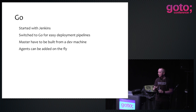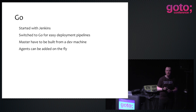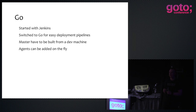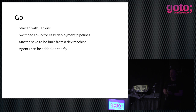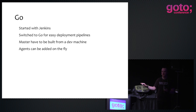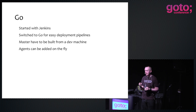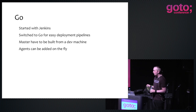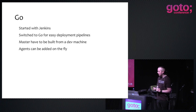We used Go as our continuous integration and continuous deployment server. We started with Jenkins — it was absolutely hellish to get continuous delivery working on Jenkins. At this point I would recommend: if you want to do continuous delivery, just don't bother with Jenkins. It's never going to be as good as taking a tool that is built for it from the ground up. So we switched to Go and life was happy.